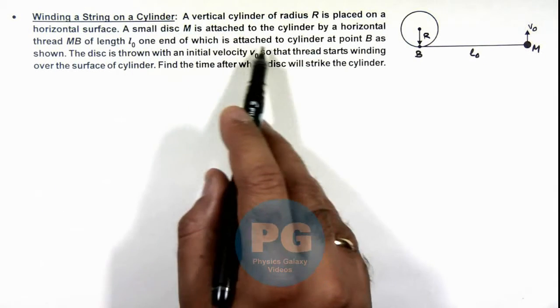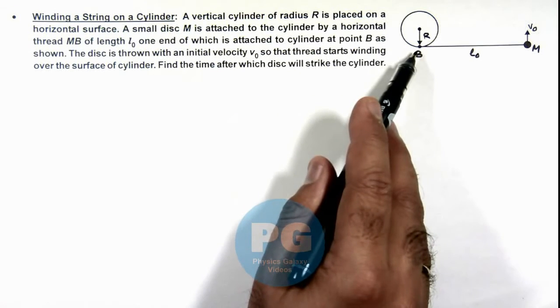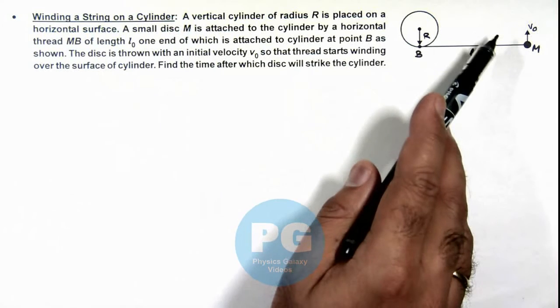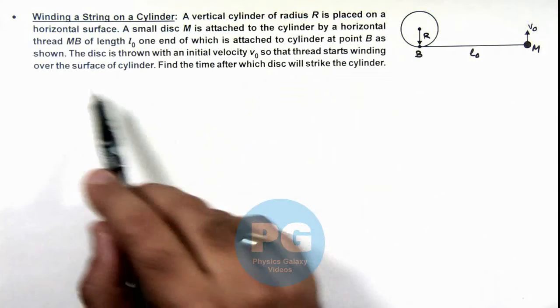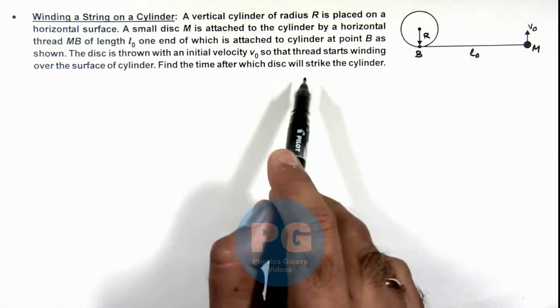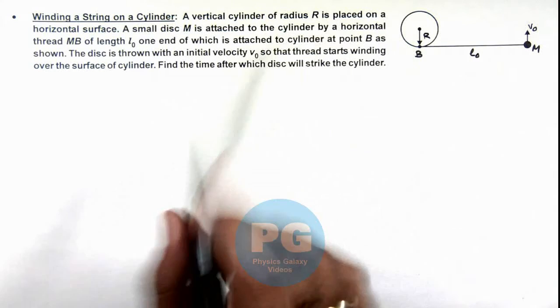One end of which is attached to the cylinder at point B as shown, and the disc is thrown with initial velocity v₀ so that the thread starts winding over the surface of the cylinder. We are required to find the time after which the disc will strike the cylinder.